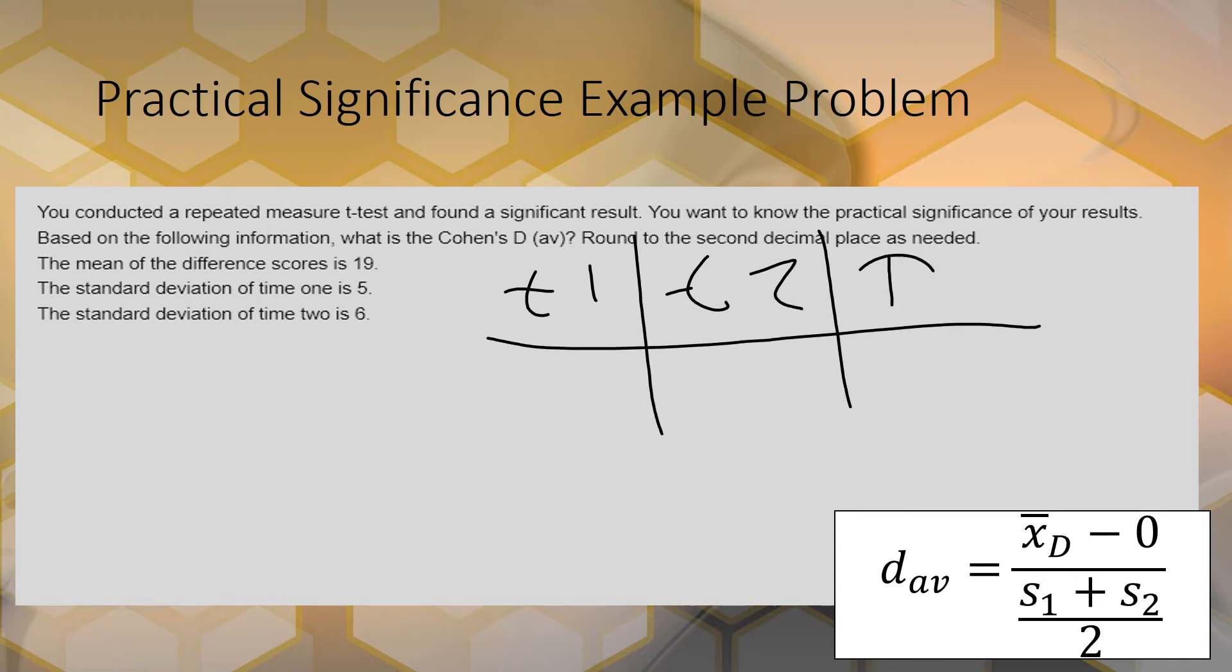So here we have time 1, then time 2, and then the difference score. This mean comes from this column. You have observations here, but you don't really need them to do the problem - I'm just showing you where these numbers come from. You find the standard deviation from this column and the standard deviation from this column, so you don't really treat them as paired when you find the standard deviation.